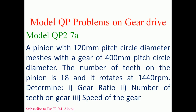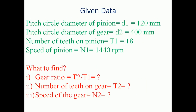There are two gears — the first is the pinion and the second is the gear — and they are meshing together. The pitch circle diameters of the pinion and gear are given, along with the number of teeth on the pinion and its speed. The given data: pitch circle diameter of pinion d1 = 120 mm, pitch circle diameter of gear d2 = 400 mm, number of teeth on pinion t1 = 18, speed of pinion n1 = 1440 rpm.